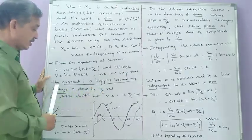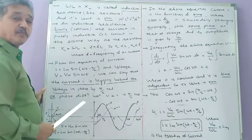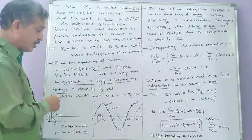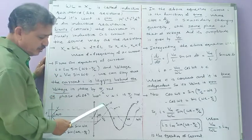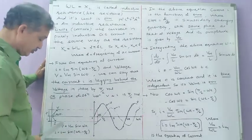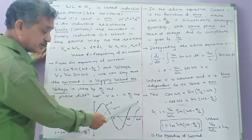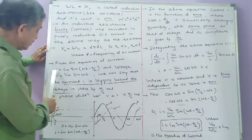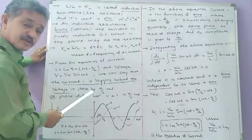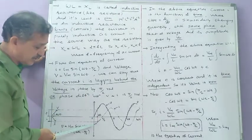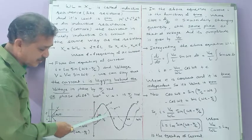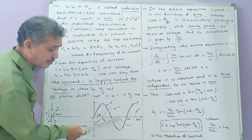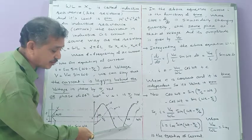The current I is lagging behind the voltage in phase by π/2 radians. This is the most important statement. From the graph: voltage is V = Vm sin(ωt) shown as a continuous line. When the voltage is at π/2, current is 0; when the voltage is at π, current is at π/2; when the voltage is at 3π/2, current is at π; when the voltage is at 2π, current is at 3π/2.